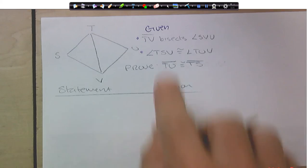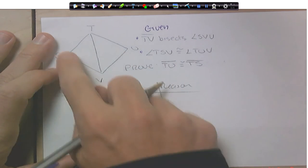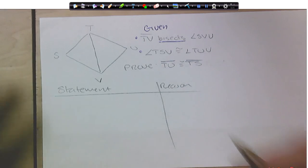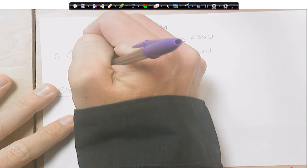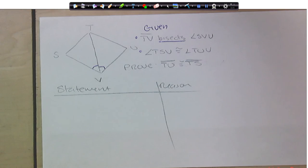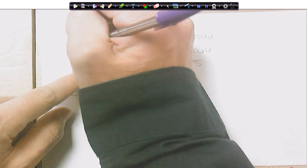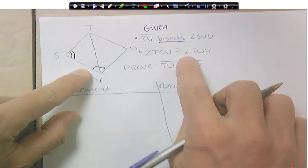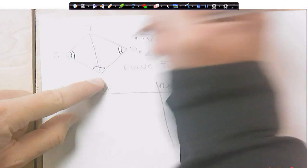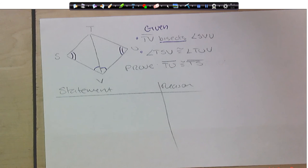So, first of all, TV bisects SVU. So, the word bisect means cut into two equal halves. So, that means this angle and this angle are going to be two congruent angles. Then it also says that TSV, this angle here, is going to be congruent to TUV, this angle here. Okay, so I have two angles. And then, if you look, actually, in the middle, TV is shared.